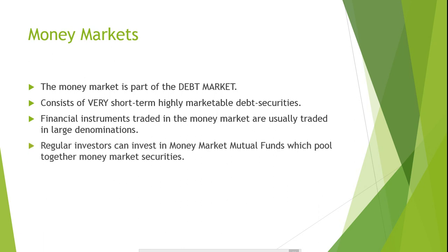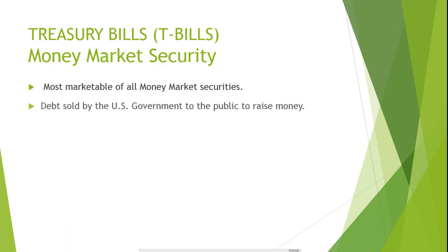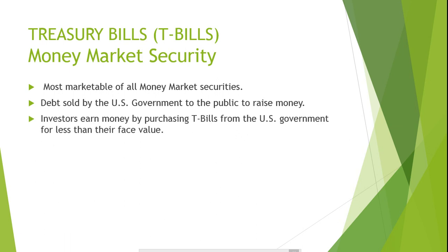U.S. Treasury bills, T-bills for short, are the most marketable instruments of all money market securities. This is because Treasury bills are the simplest form of money market securities. The U.S. government sells T-bills to the public to raise money. Investors buy T-bills from the government at a discounted price below their face value. When the T-bill matures, the investor receives a payment equal to the Treasury bill's face value. The difference between the purchase price and the face value is the investor's return on their investment.